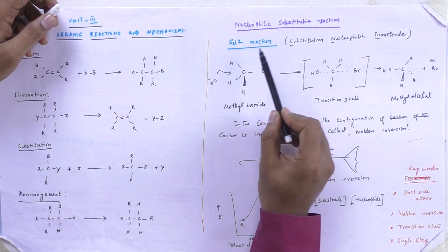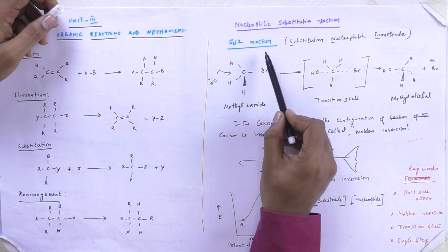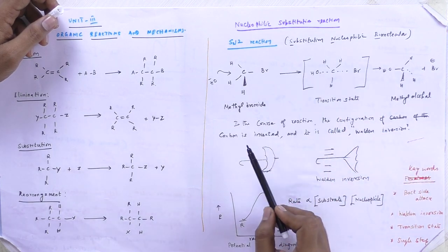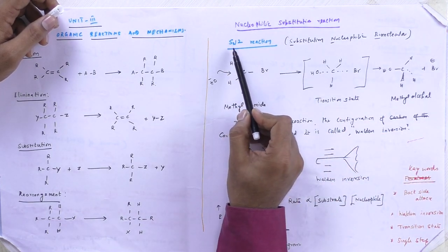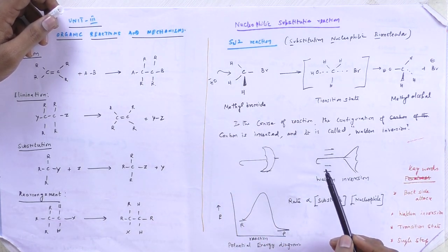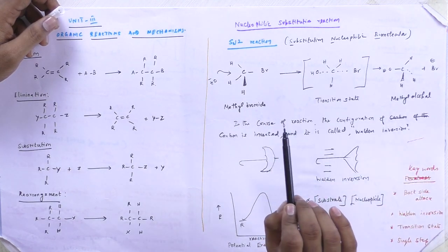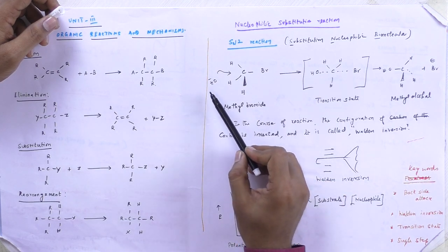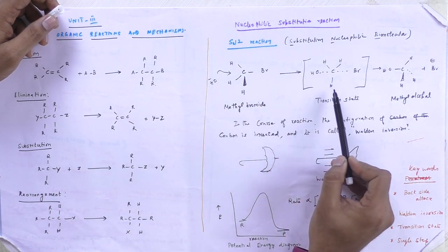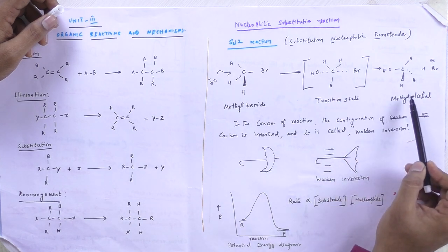In nucleophilic substitution, there are two types in our syllabus. One is SN2 reaction, which stands for Substitution Nucleophilic Bimolecular reaction — S for substitution, N for nucleophilic, and 2 for bimolecular. As a simple example, methyl bromide is converted into methyl alcohol. The OH group attacks the methyl bromide from the backside, transforms through a transition state, and finally the product is methyl alcohol.